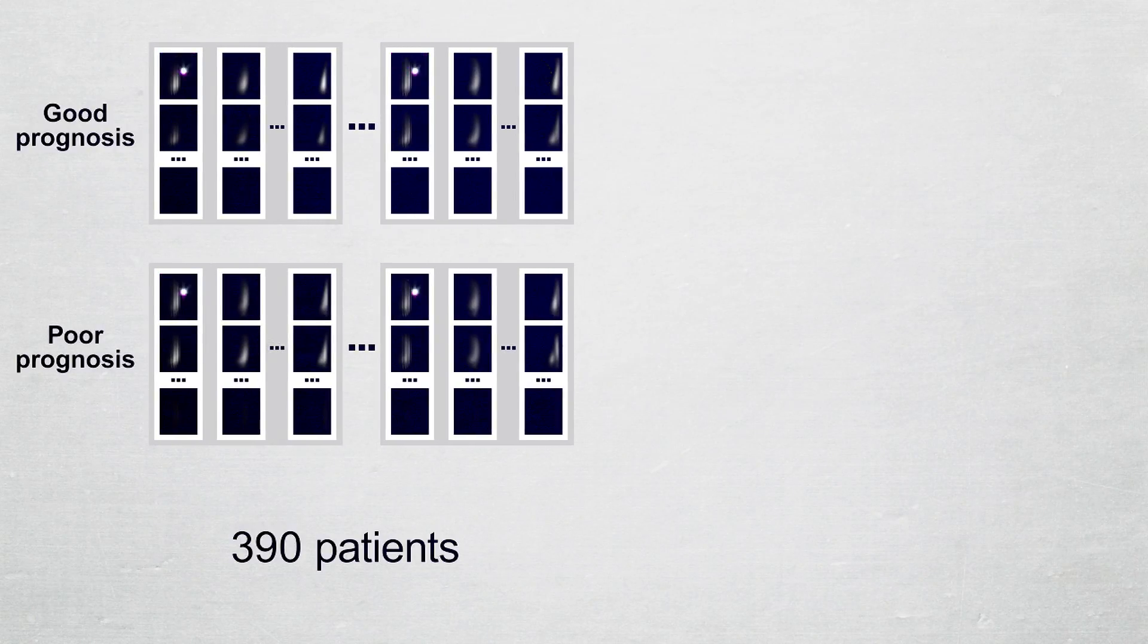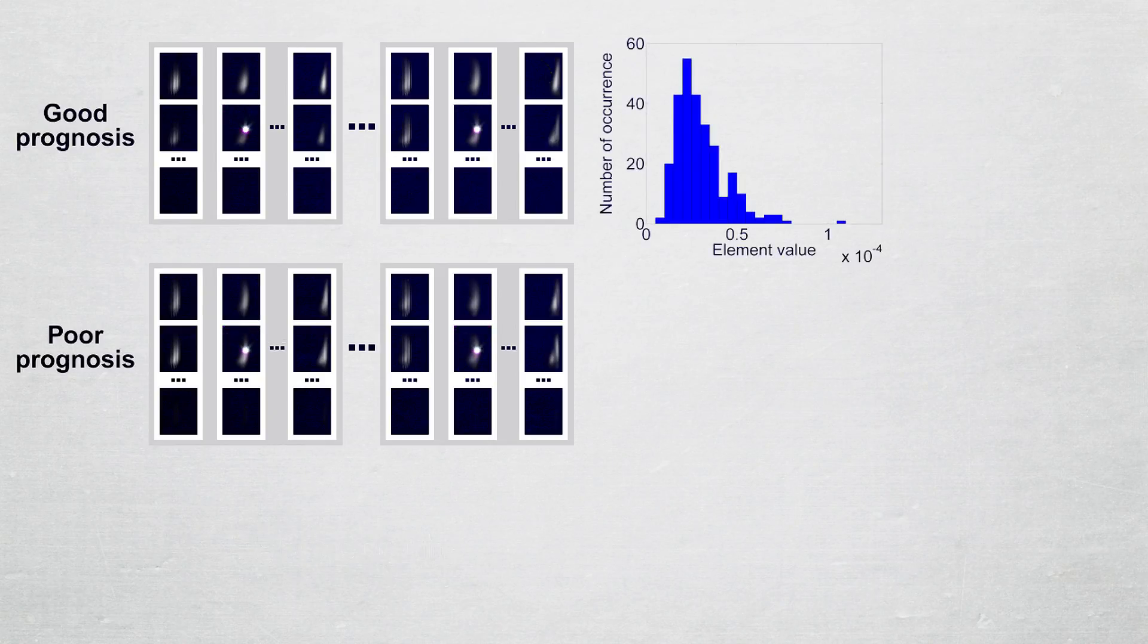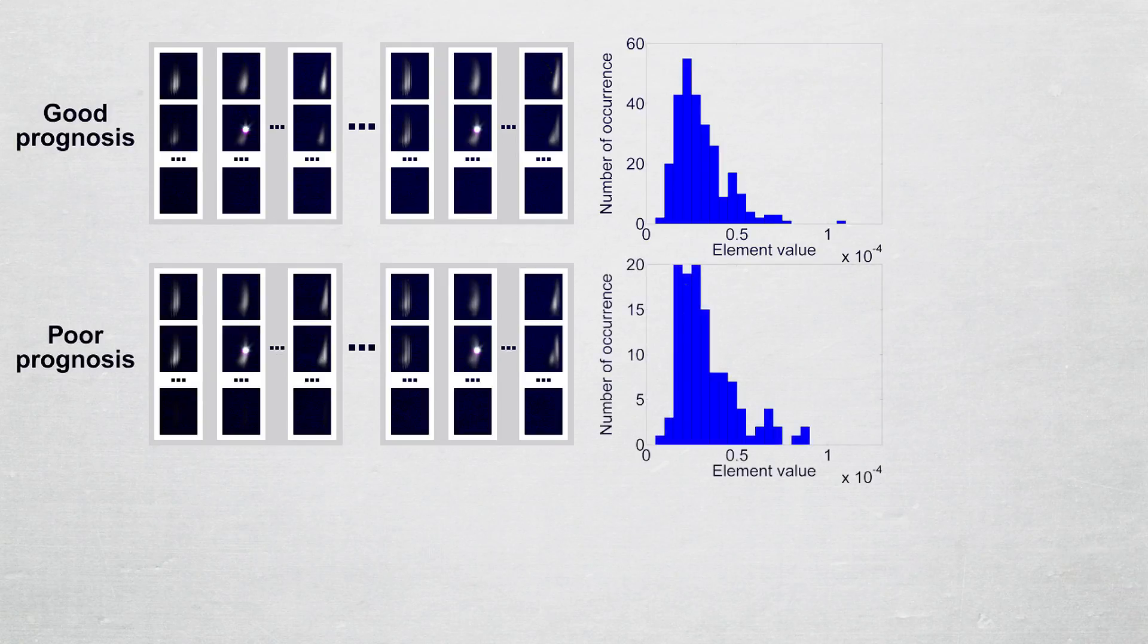Each element of the GLEM4D is treated independently, and the frequency of each element value in patients with good prognosis is calculated and plotted as a histogram. The same computations are performed for patients with poor prognosis.